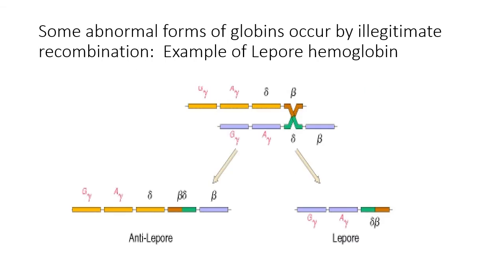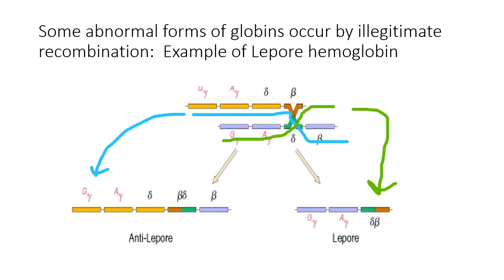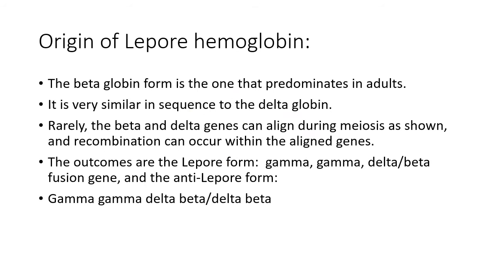A picture from a textbook illustrates the same thing: exchange between delta and beta produces the Lepore hemoglobin, which has just G gamma, A gamma, and the delta-beta fusion. The anti-Lepore has G gamma, A gamma, delta, beta-delta, and beta. This is a result of illegitimate recombination because beta and delta are not allelic to one another, even though they are adjacent on the same chromosome. As a result of this rare recombination, it is seen in the population, but homozygotes don't really occur, so it doesn't have any terrible effect on most individuals.